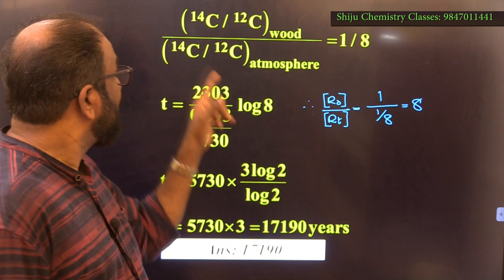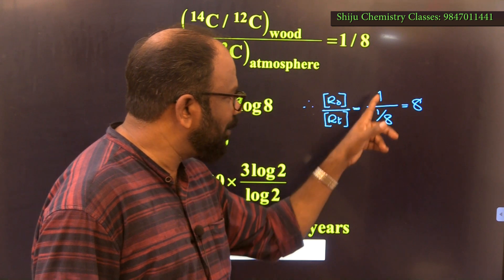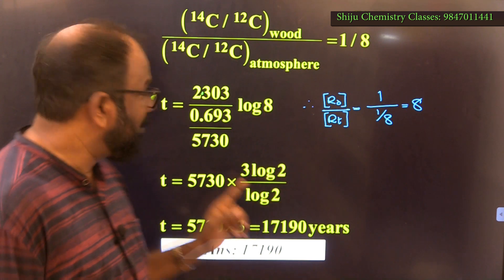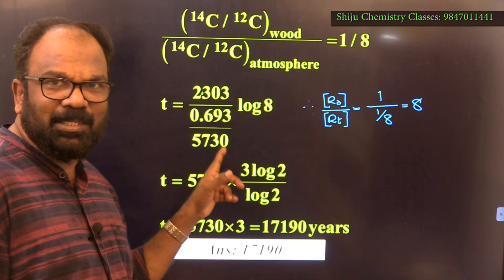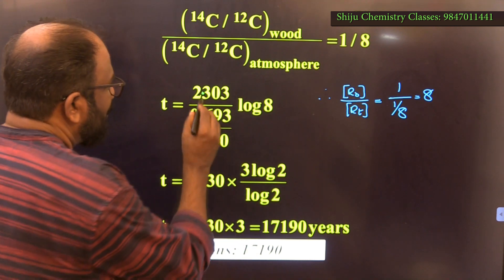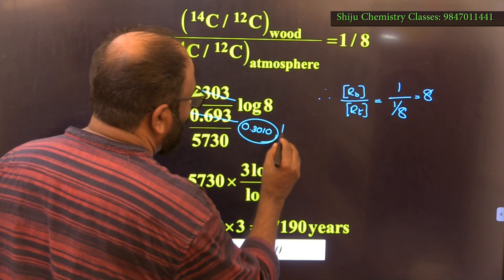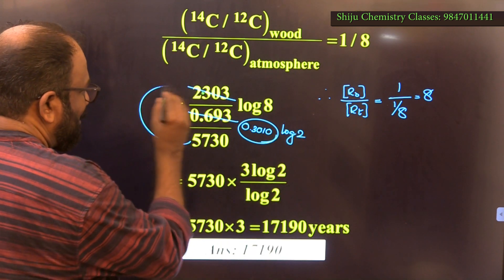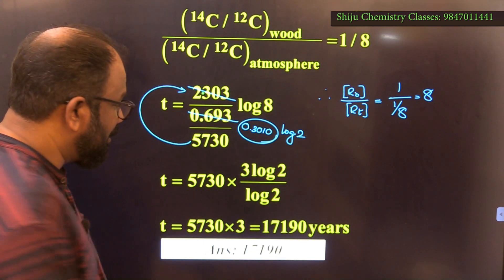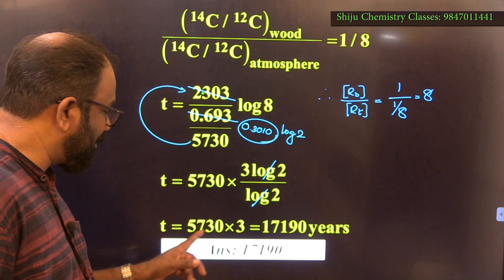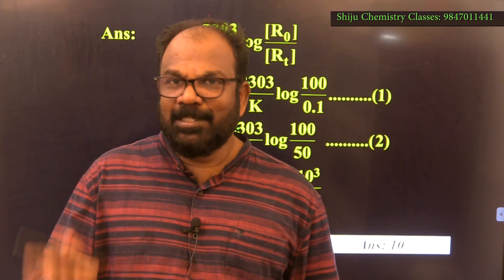Since C14/C12 of wood is 1/8th that of atmosphere, R₀/Rₜ = 8. Substituting: t = (2.303 / (0.693/5730)) × log 8. Cancelling 2.303 and 0.693, the denominator becomes 0.3010 (log 2), giving t = 5730 × (3 log 2 / log 2) = 5730 × 3 = 17190 years. The answer is 17190.